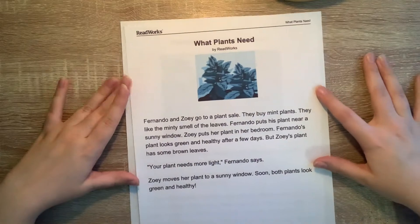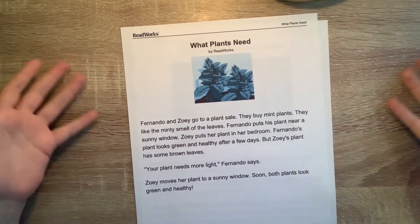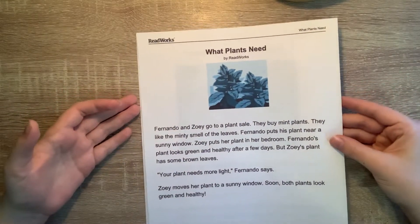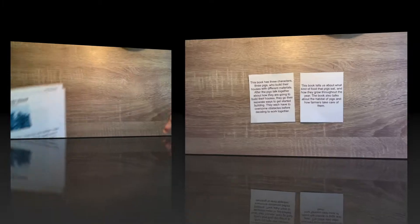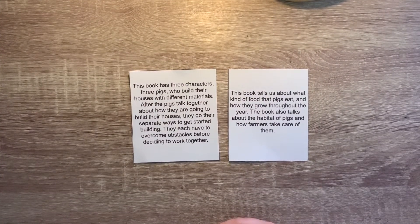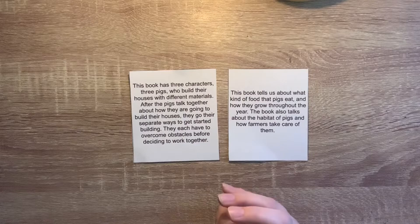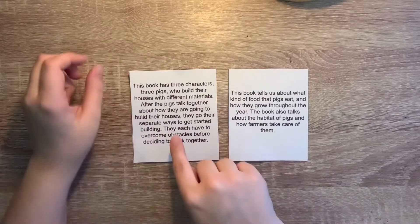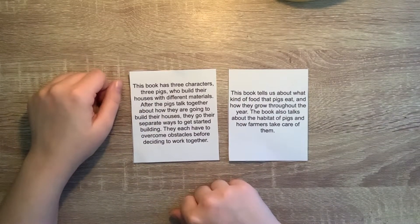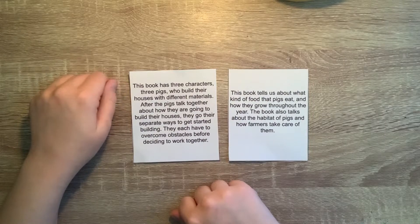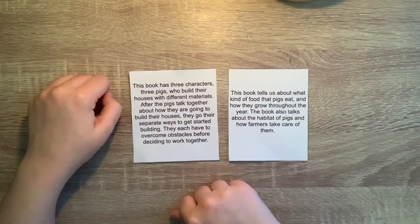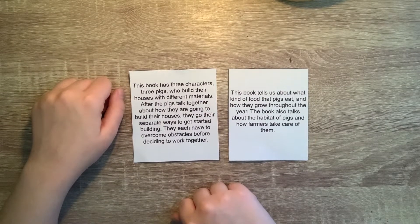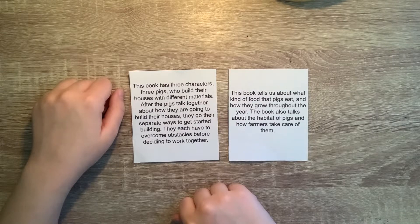Now that we have learned about books that tell stories and books that are informational, we're going to play a quick game in which we have to decide if a book is an informational text or a text that tells a story. I have cards here that have a summary of the book, and we have to use this information to determine which type it is. Up first, this card says: this book has three characters — three pigs — who build their houses with different materials. After the pigs talk together about how they are going to build their houses, they go their separate ways to get started building. They each have to overcome obstacles before deciding to work together.